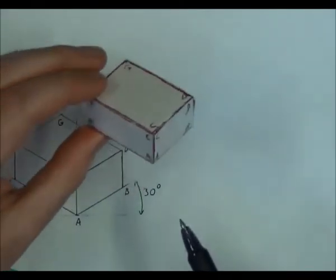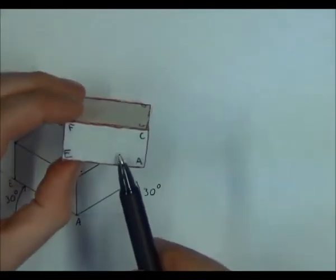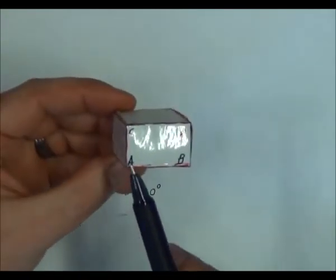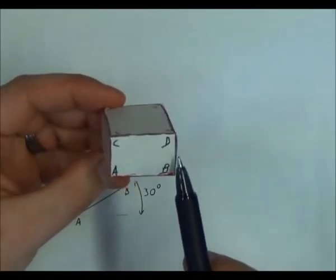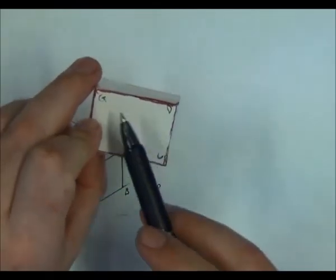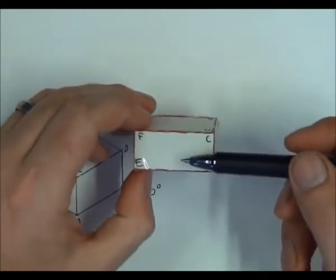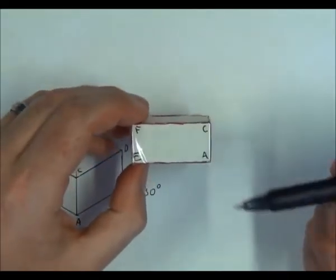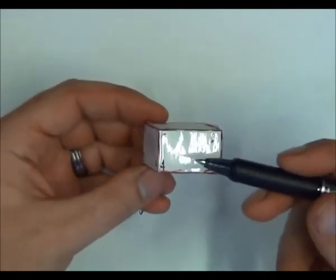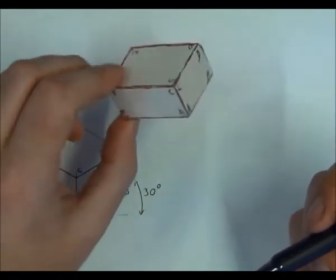In this example, I am going to do 2D views of block ACFE, block ABDC, and block CDGF. The first one I am going to choose as my main view. To the right of that I am going to draw the right-hand view, and to the top, the top view.